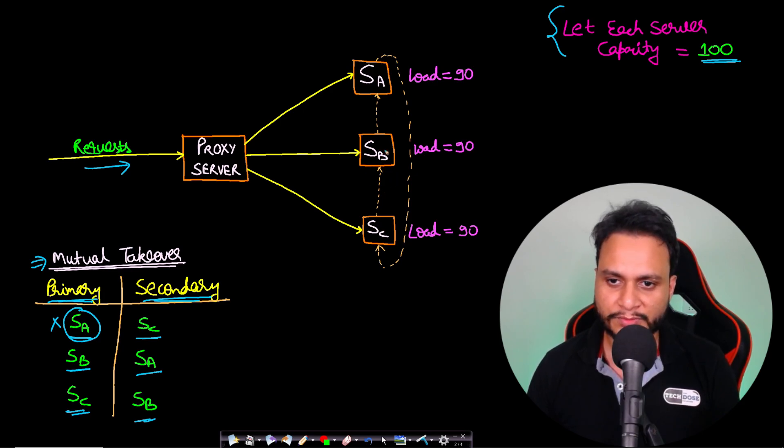Now let's consider the scenario that SC has crashed. If server SC has crashed, then it will not be able to serve any request and all its requests will be routed to its secondary server assigned, which is you can check the table and it is SB. So if all these requests are routed to SB then the load will get added, isn't it?